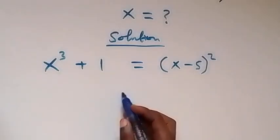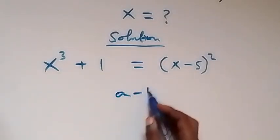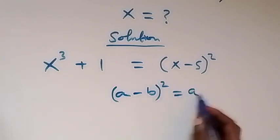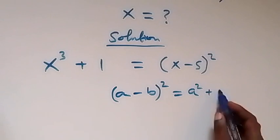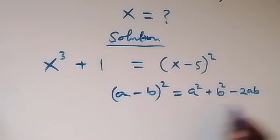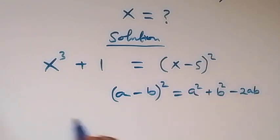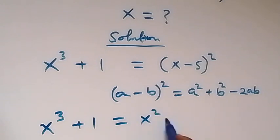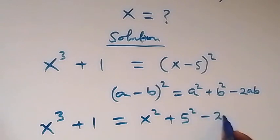From the identity, when we have a minus b squared, this is the same as a squared plus b squared minus 2ab. Applying this to what we have on the right, we get x raised to power 3 plus 1 equals to x square plus 5 square minus 2 times x times 5.